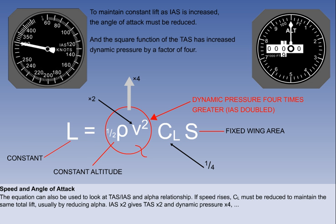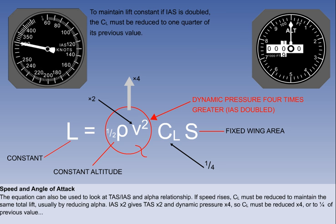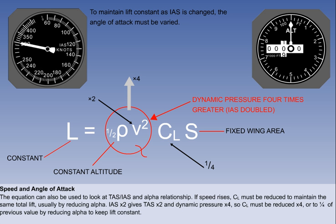If indicated airspeed is doubled, here from 150 knots to 300, the TAS also doubles, increasing dynamic pressure by 4. If dynamic pressure is increasing by a factor of 4, then to maintain lift at a constant, the CL must be reduced by the same factor, in other words, to a quarter of its previous value, by reducing the angle of attack appropriately to keep the aircraft at a constant height.